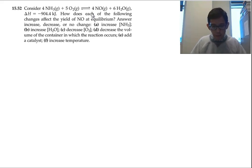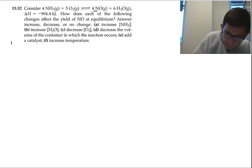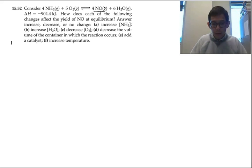How does each of the following changes affect the yield of NO at equilibrium? NO is a product. When the equilibrium shifts right, you increase NO. When the equilibrium shifts left, you decrease NO.